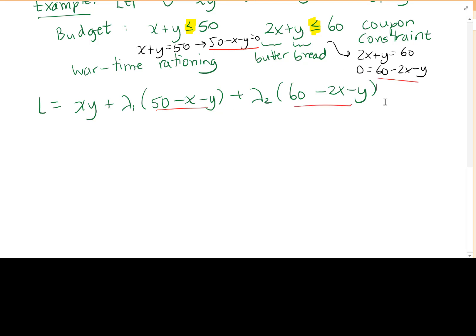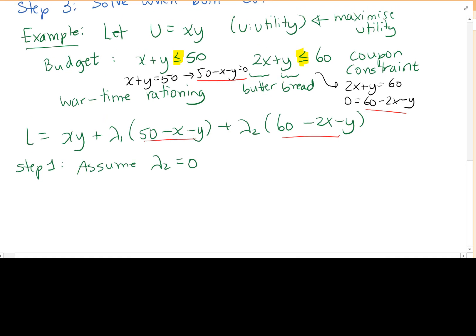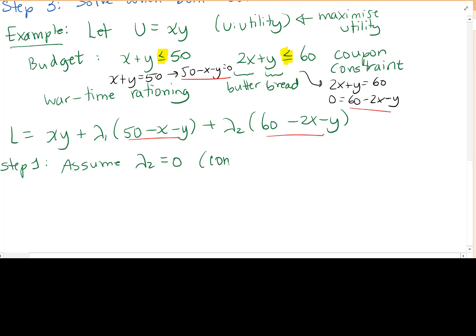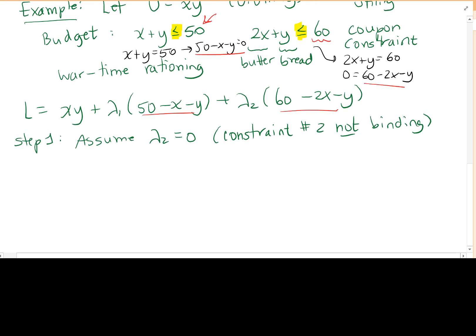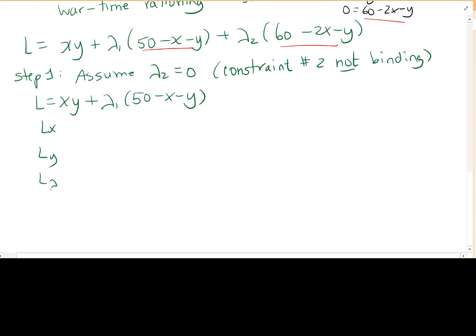In step one, we assume lambda two equals zero, meaning constraint two is non-binding. That means we're assuming we're not actually going to run out of coupons — money will be the binding issue, not coupons. So we ignore constraint two and solve the problem assuming money is the key constraint.